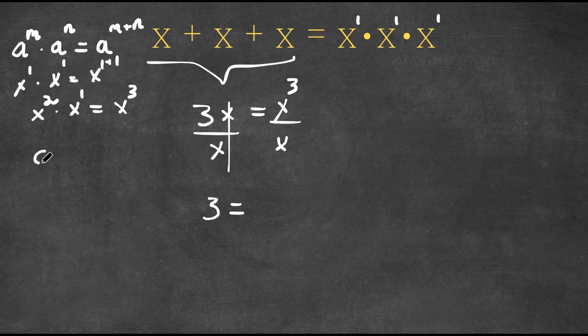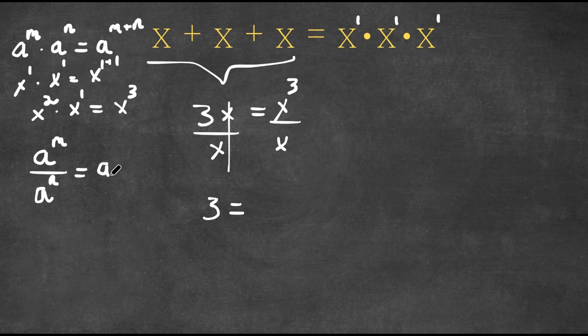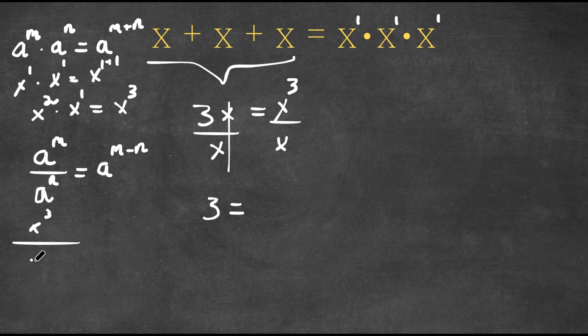Now if we have something in the form a to the power of m over a to the power of n, this is equal to a to the power of m minus n. So x to the power of 3 over x to the power of 1, this is equal to x to the power of 3 minus 1, and 3 minus 1 is 2, so this is equal to x squared.